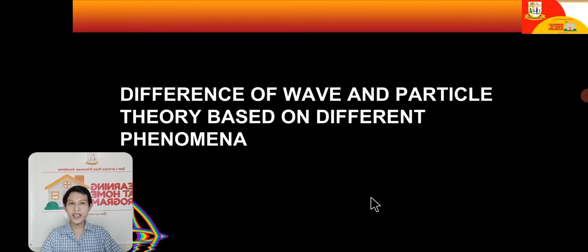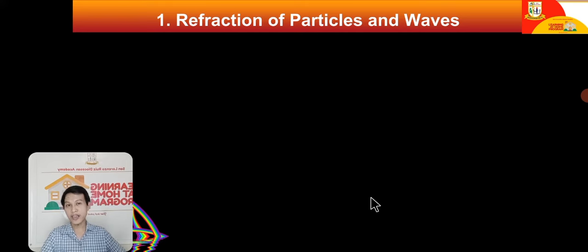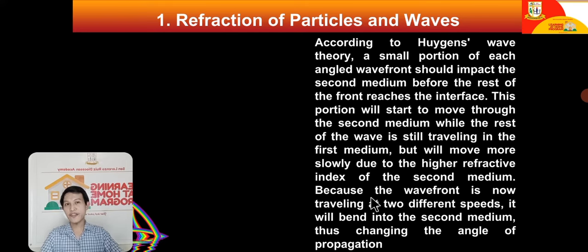So what is the difference between wave and particle theory based on different phenomena? Let us analyze. What is the difference in how scientists who believe in wave theory versus particle theory explain things? Let us look at refraction. According to Huygens' wave theory, a small portion of each angled wave front should impact the second medium before the rest of the front reaches the interface.